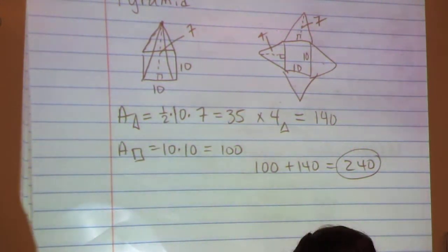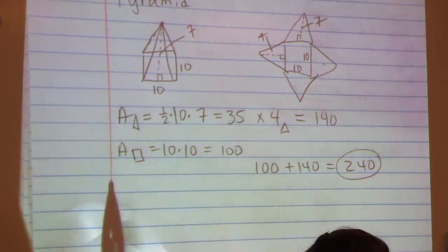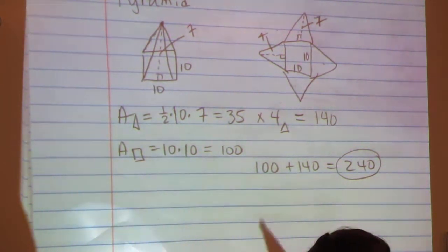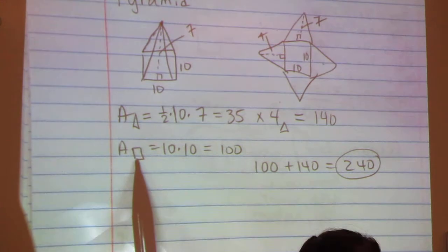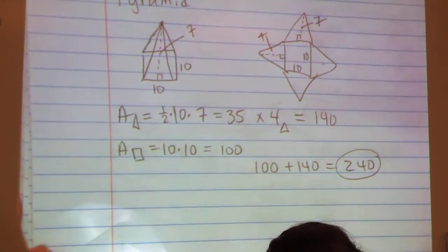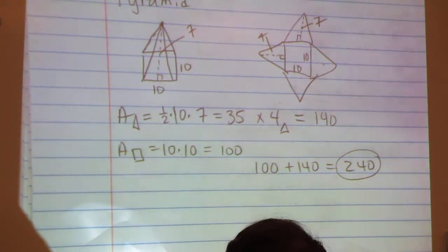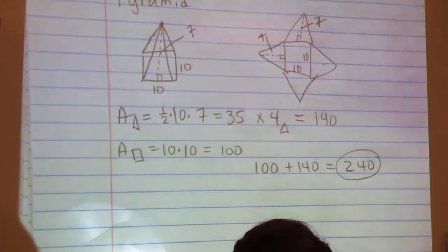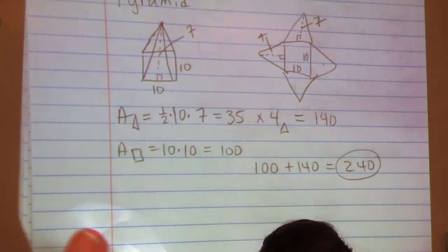This would work even if you were doing the area of, let's say, a triangular prism. You would just do the area of the base and it would be a triangle. So now you have enough information to find the surface area of whole pieces.